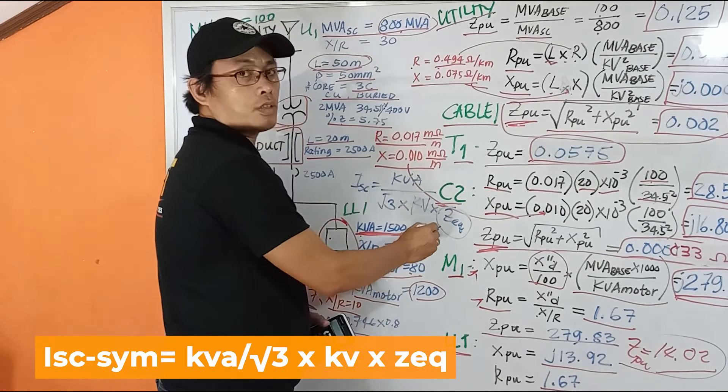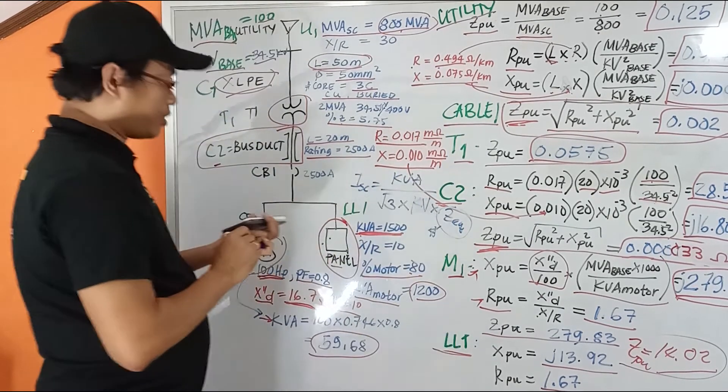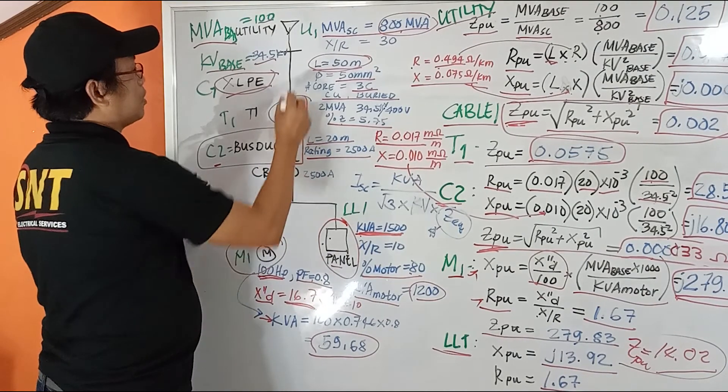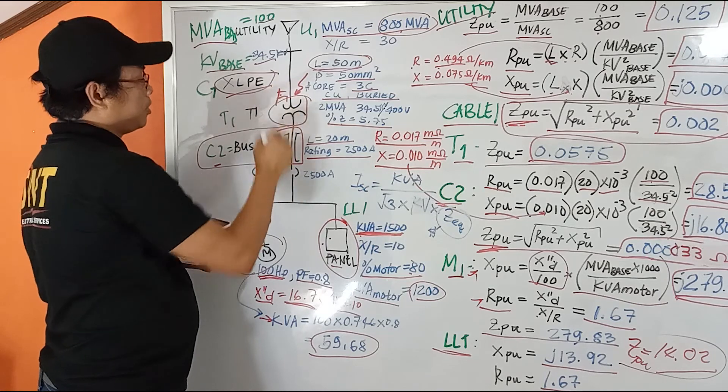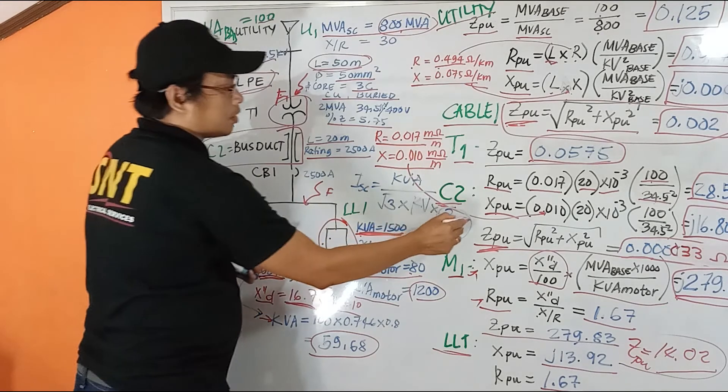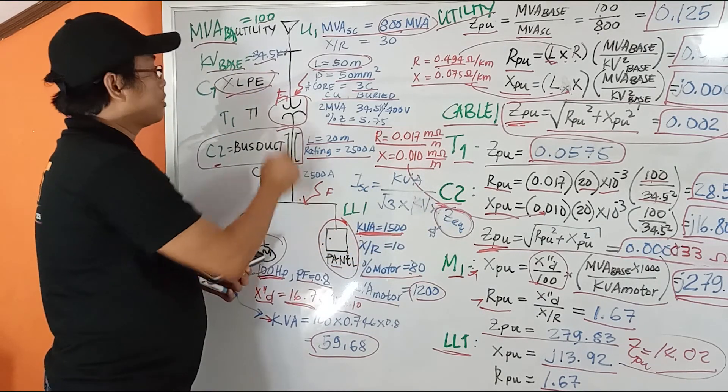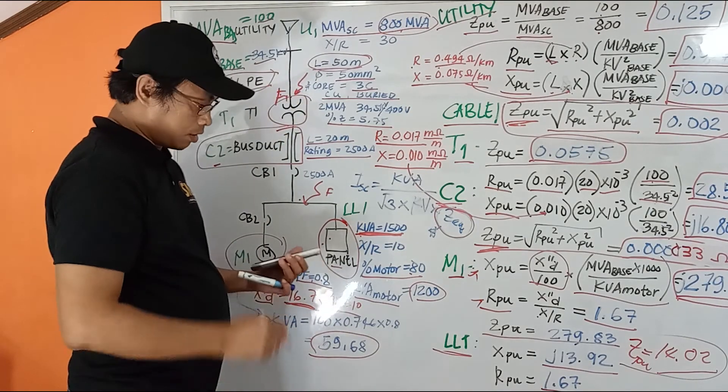Let's say we get the short circuit, the fault at this level here, at this point. Or let's say, let's get the fault here. The problem is to get the equivalent impedance at this point, the fault location, or fault data.